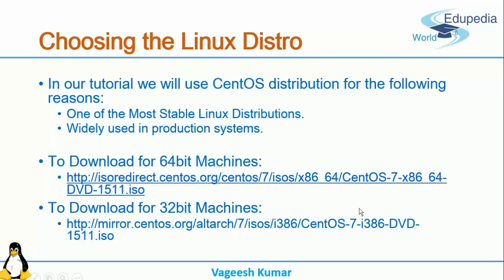I prefer that you use a 64-bit virtual machine and install the image from the CentOS website. If you have any trouble copying the URL into your browser, you can search for CentOS website, go to CentOS.org, go to the download page, and you will be taken to the latest version download where you can choose the DVD ISO image to download.